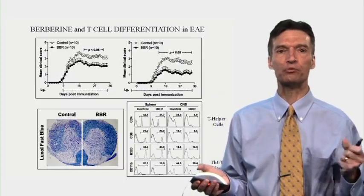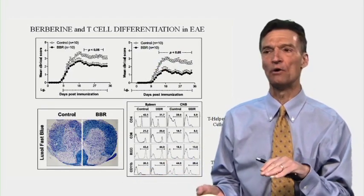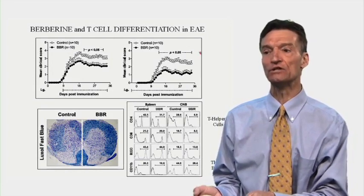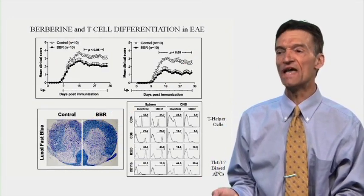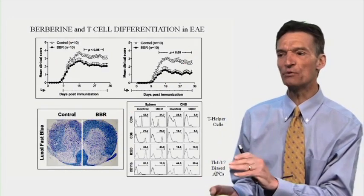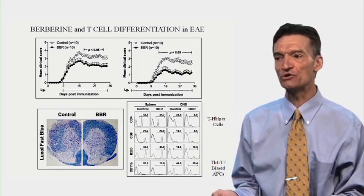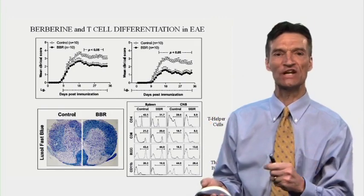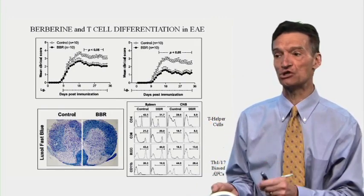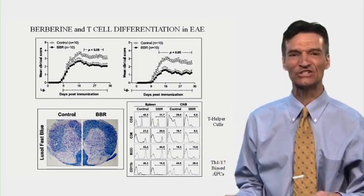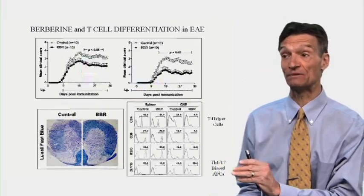Berberine pretreatment or post-treatment following induction of experimental multiple sclerosis is blunted with berberine. The spinal cords look a lot better in the berberine animals. If you look at the T helper cells and the antigen presenting cells, there is a blunting of T helper cells — fewer Th1/Th17 helper cells, fewer inflammatory lymphocytes in the brain tissue, and fewer antigen presenting cells biased towards the inflammatory Th1/Th17 pathway.